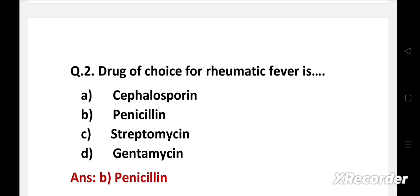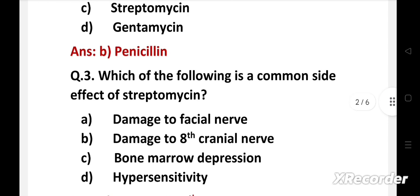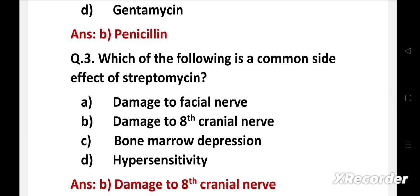Next question: which of the following is a common side effect of streptomycin? Option A: damage to facial nerve, B: damage to eighth cranial nerve, C: bone marrow depression, D: hypersensitivity. Right answer is option B, damage to eighth cranial nerve. Antibiotics in the aminoglycoside class, that is streptomycin, gentamicin, etc., may cause damage to eighth cranial nerve which results in loss of hearing, balancing problems, neuromuscular blockage, peripheral neuropathy, dizziness, and vomiting.